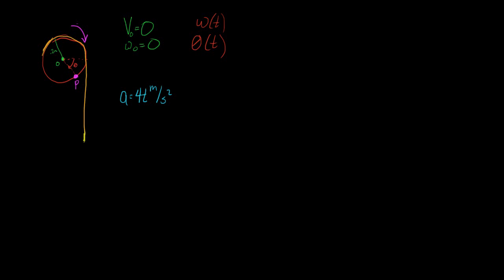Now let's look at point P. Point P is on the outside of this disk, so the path it travels is a circular path. Since it travels on a circular path, it's going to have some normal component of acceleration pointing back toward the center, and some tangential component of acceleration tangent to its direction of motion. Its tangential component is also going to be 4t meters per second squared.